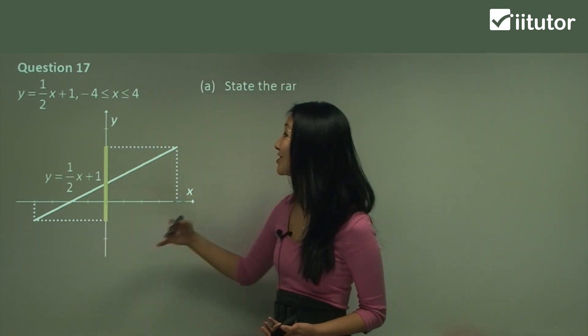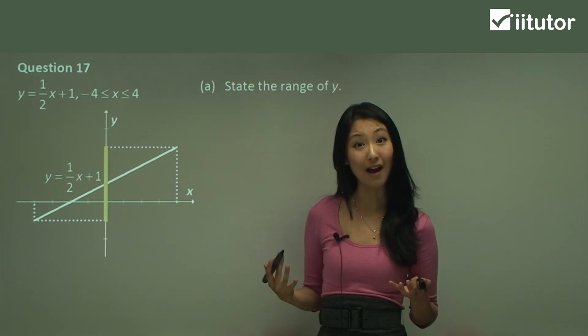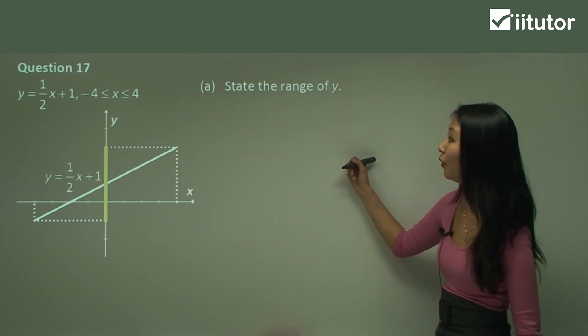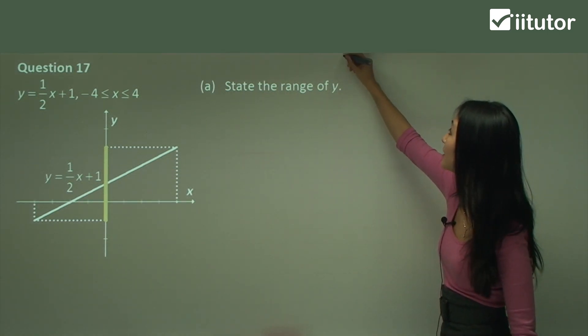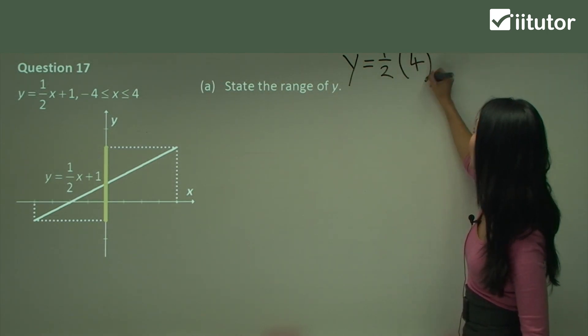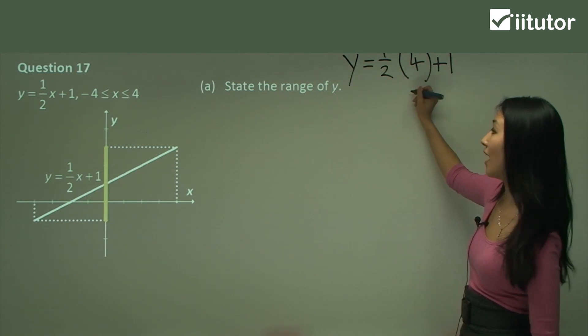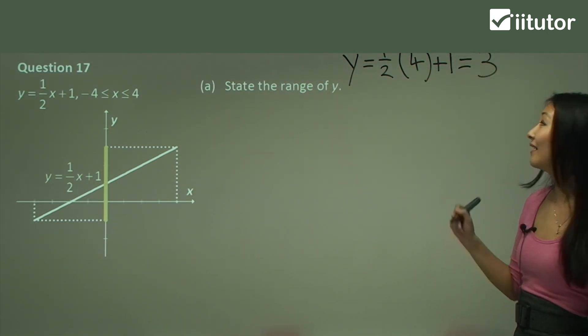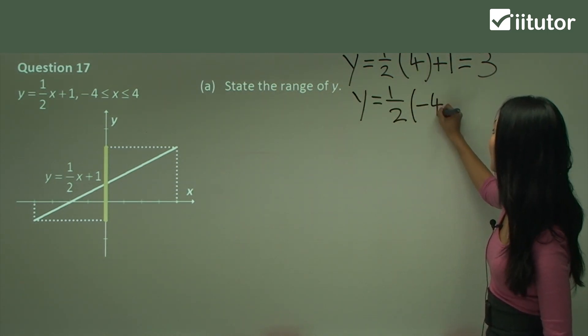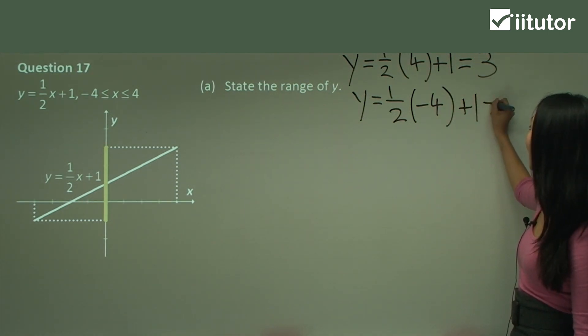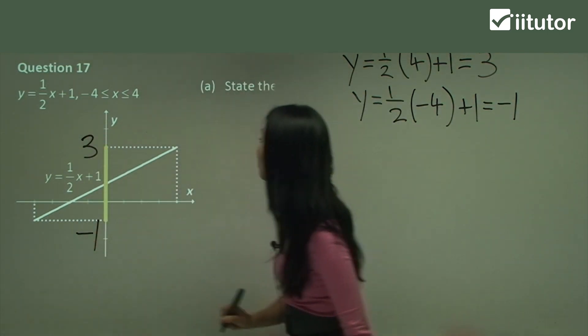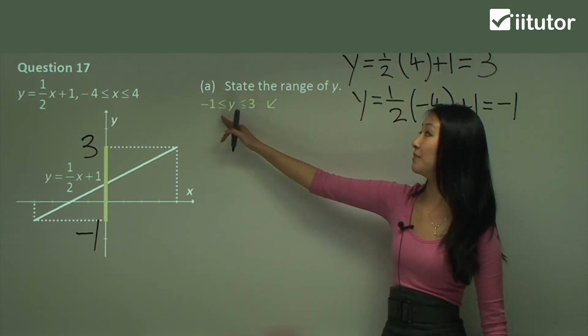So what we need to do now is just substitute these values in and find out their y values. So we want to find this y value and that y value. So substituting 4, let's substitute 4 into it first. So y will equal half times 4, which is just 2 plus 1, which should just give us 3. Right? And substituting in negative 4, that gives us negative 2 plus 1 equals negative 1. So I've worked out that this value is 3 and this value is negative 1. So therefore, our range is going to go from negative 1 to 3.